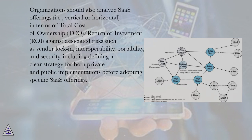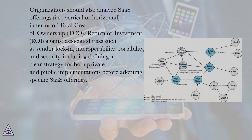Organizations should also analyze SaaS offerings, i.e., vertical or horizontal, in terms of total cost of ownership (TCO) and return on investment (ROI), against associated risks such as vendor lock-in, interoperability, portability, and security, including defining a clear strategy for both private and public implementations before adopting specific SaaS offerings.